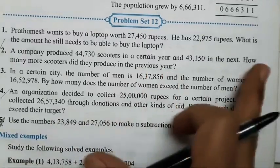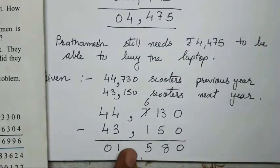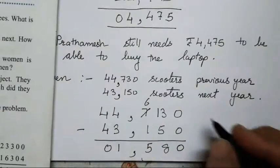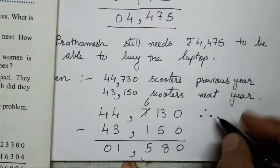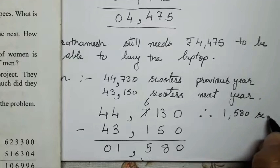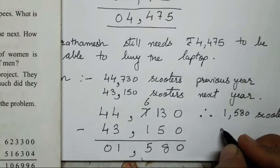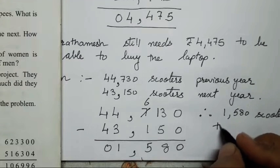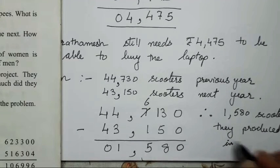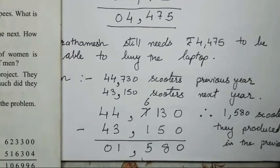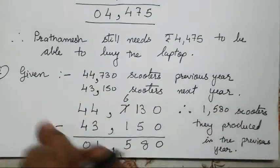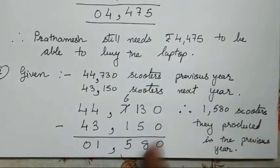The question asked how many more scooters did they produce in the previous year. So the conclusion is: 1,580 more scooters were produced in the previous year. You all have to write this conclusion statement using the language from the question itself.